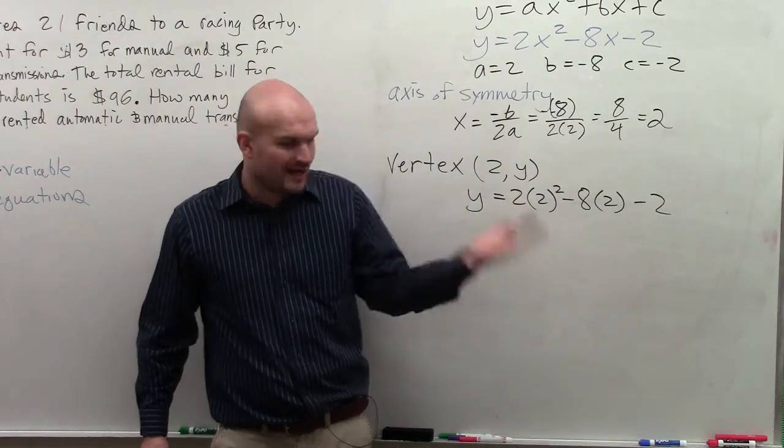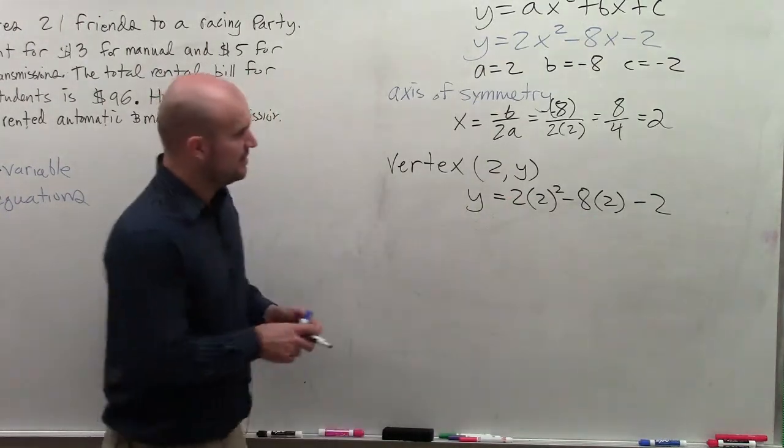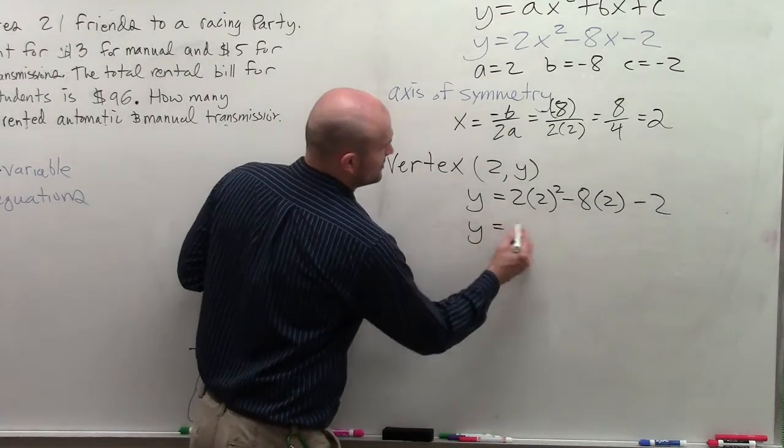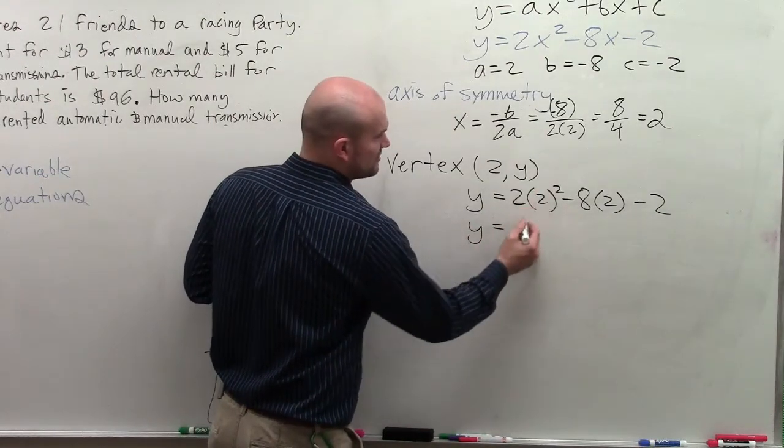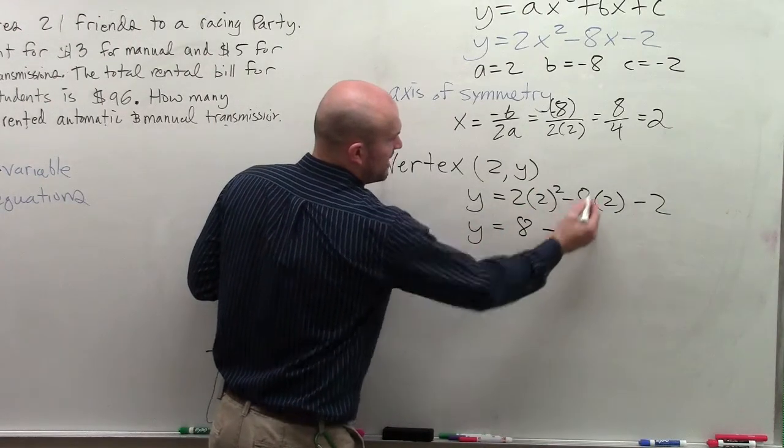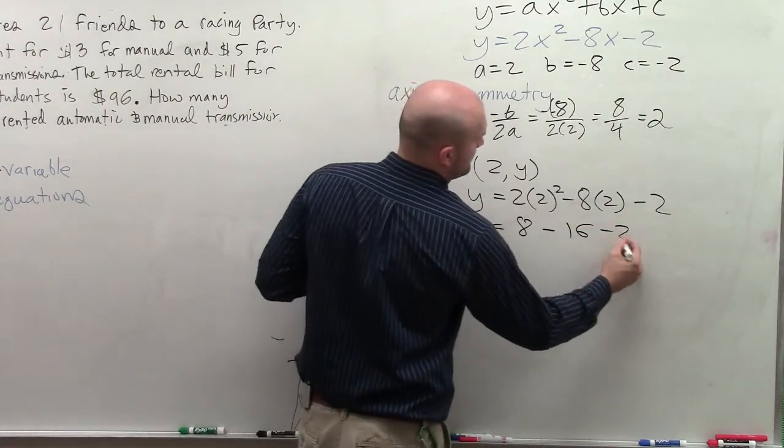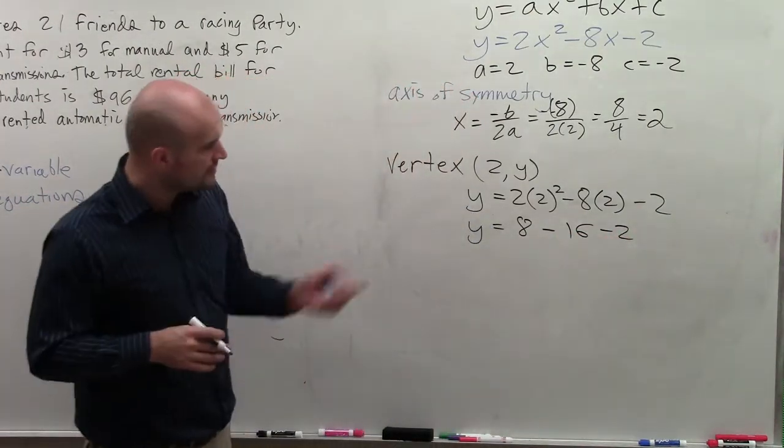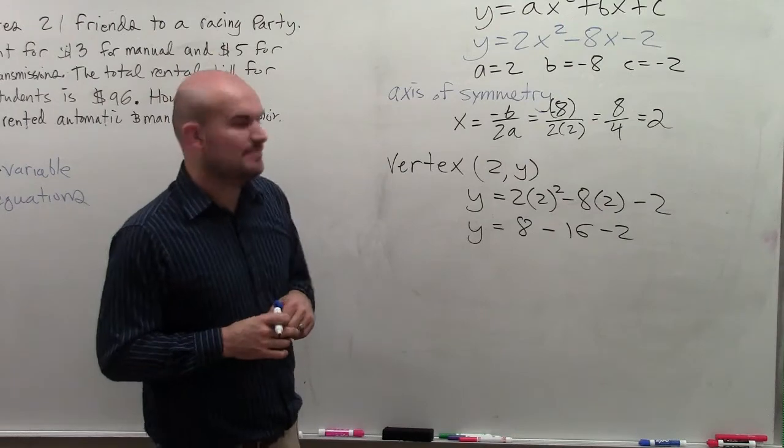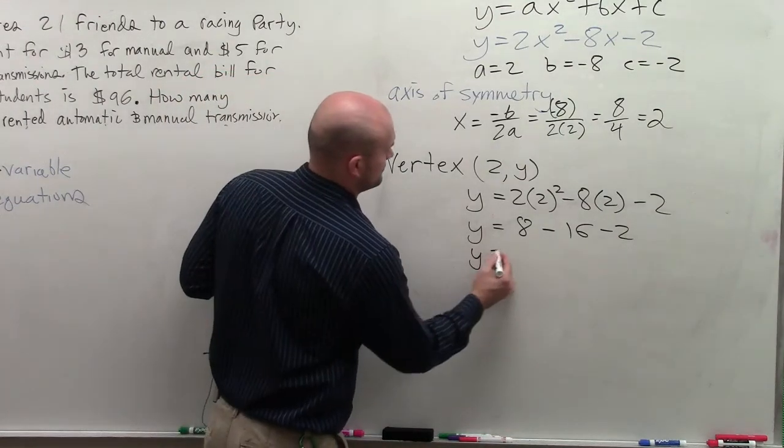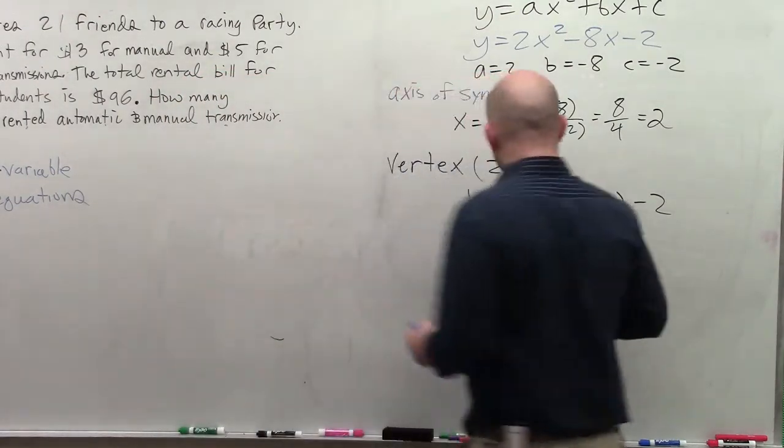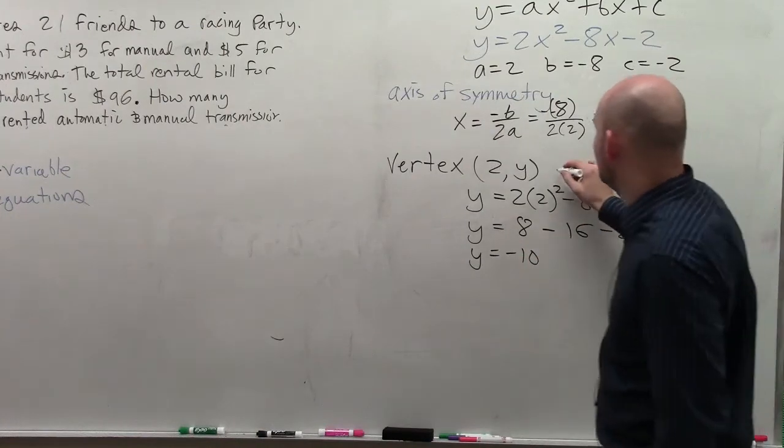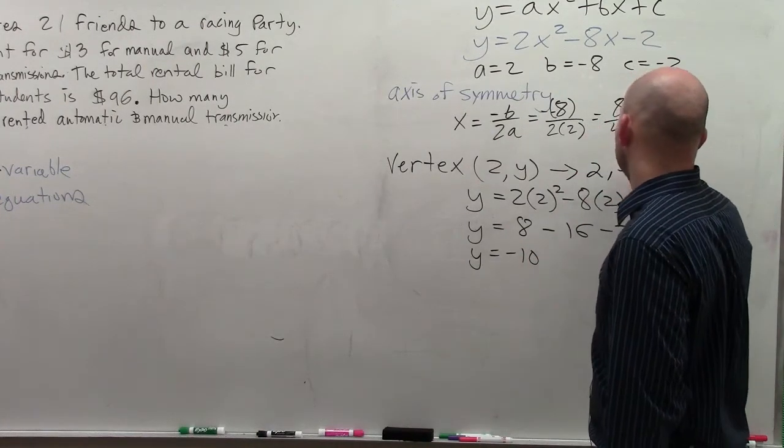Does that make a little more sense, Matt, what I did? I know it's kind of hard without numbers. So now I have y equals 2 squared is 4, which is going to be 4 times 2 is 8 minus 16 minus 2. So 8 minus 16 is negative 8. Minus 2 is negative 10. So therefore, now I know what my y coordinate is. So it's 2 comma negative 10.